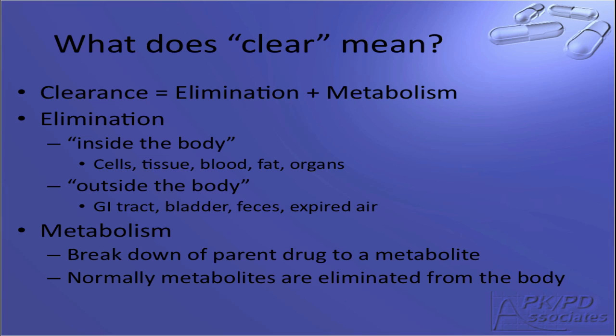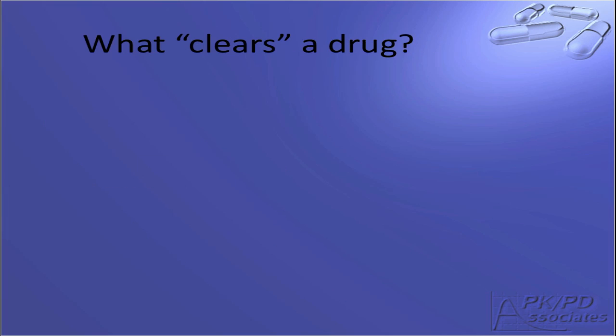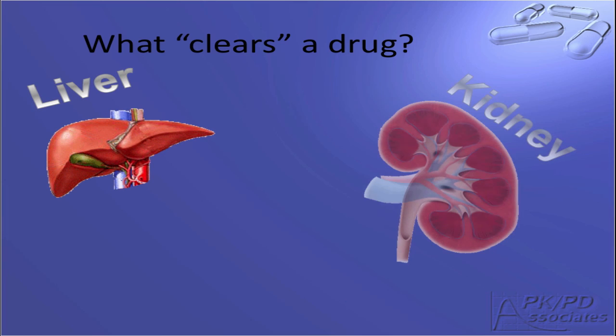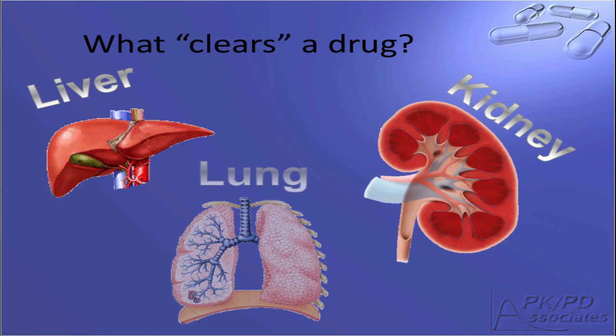Metabolism is the breakdown of the parent drug into various metabolites. These metabolites are then eliminated from the body. The primary organs involved in clearance are the liver, the kidney, and the lungs. We will look at each of these organs in detail next.